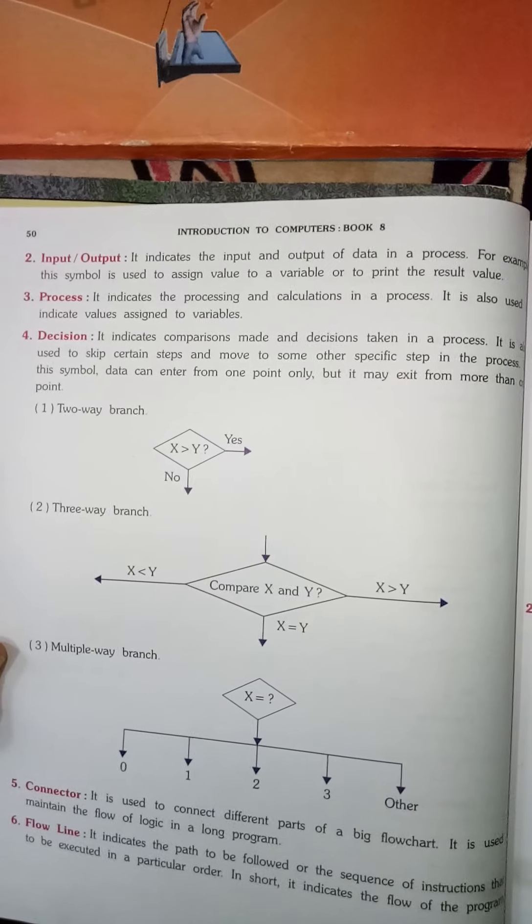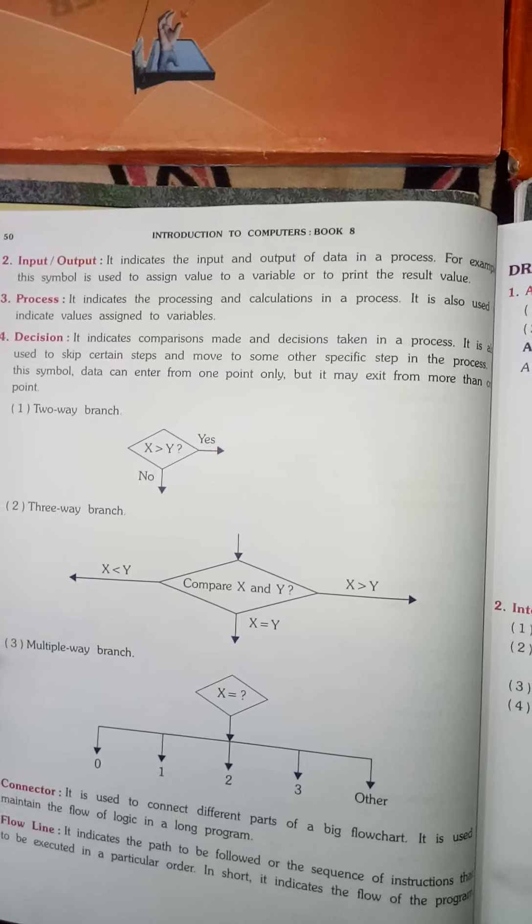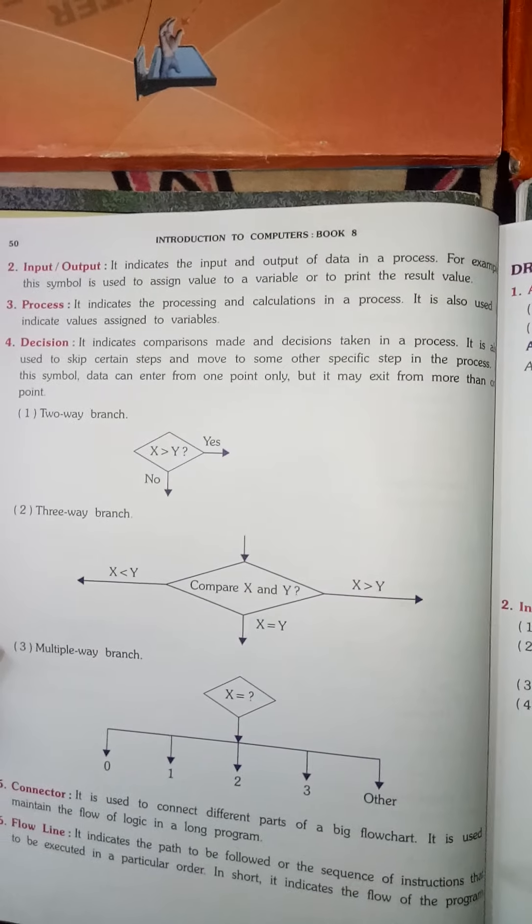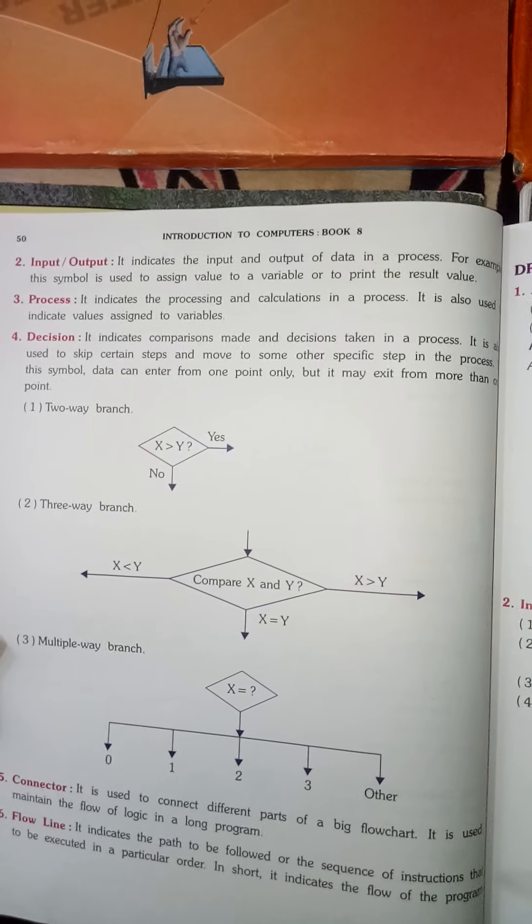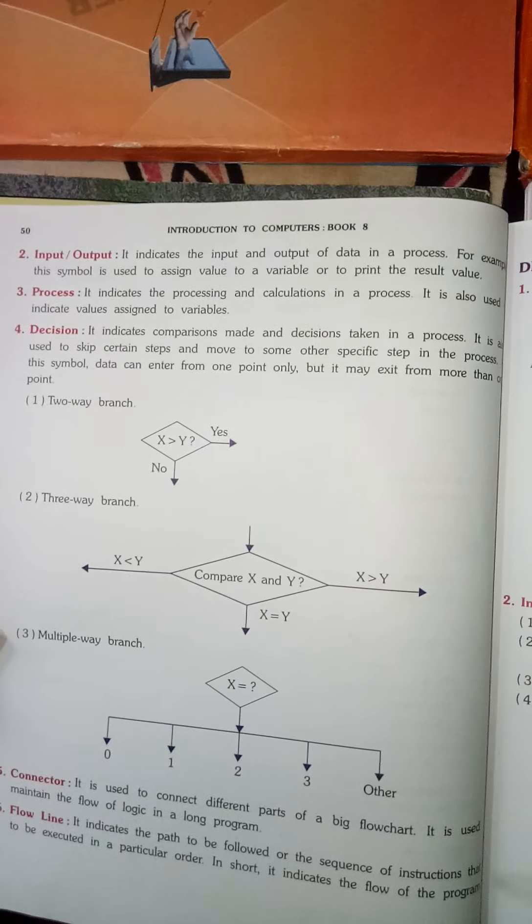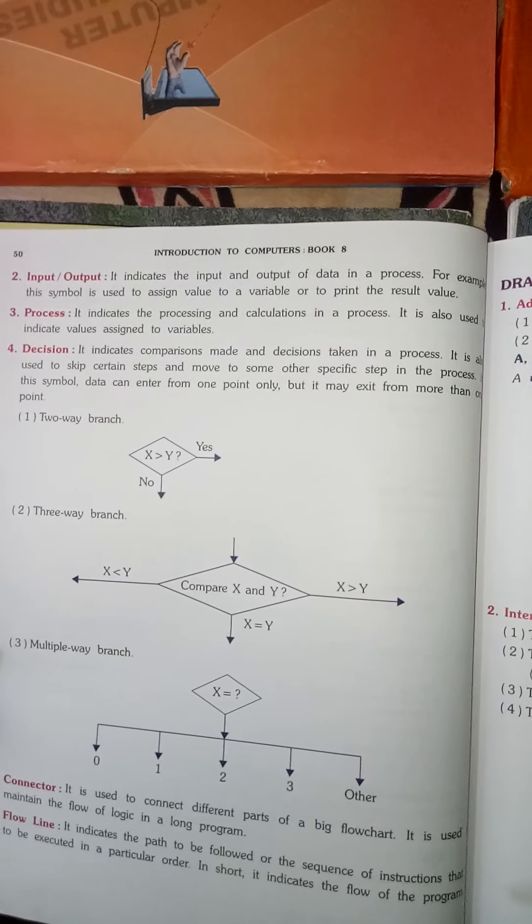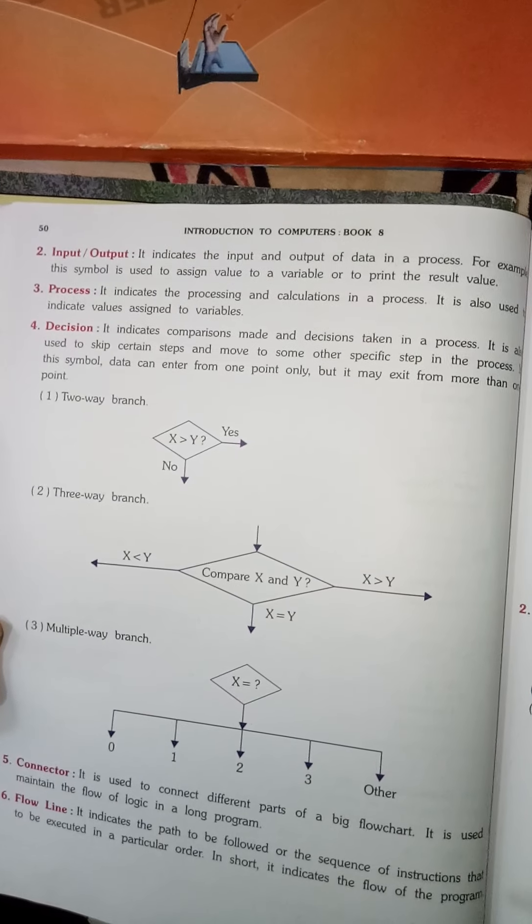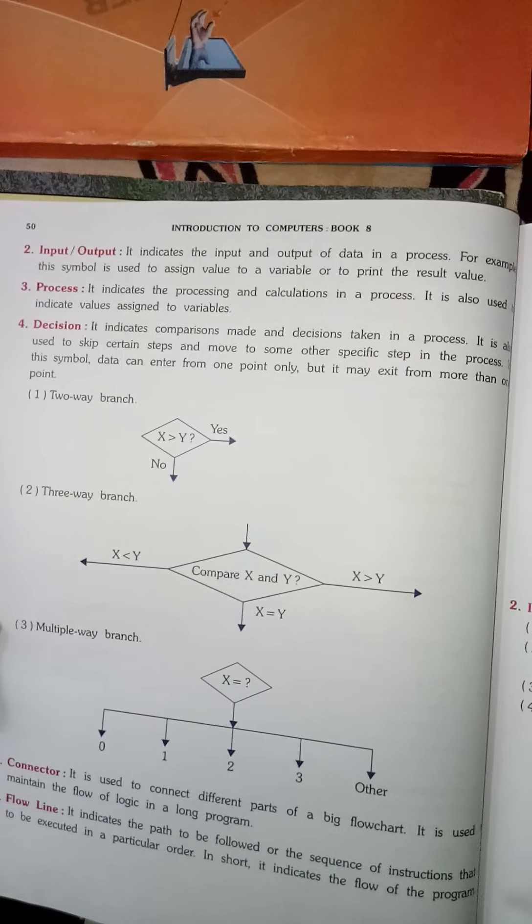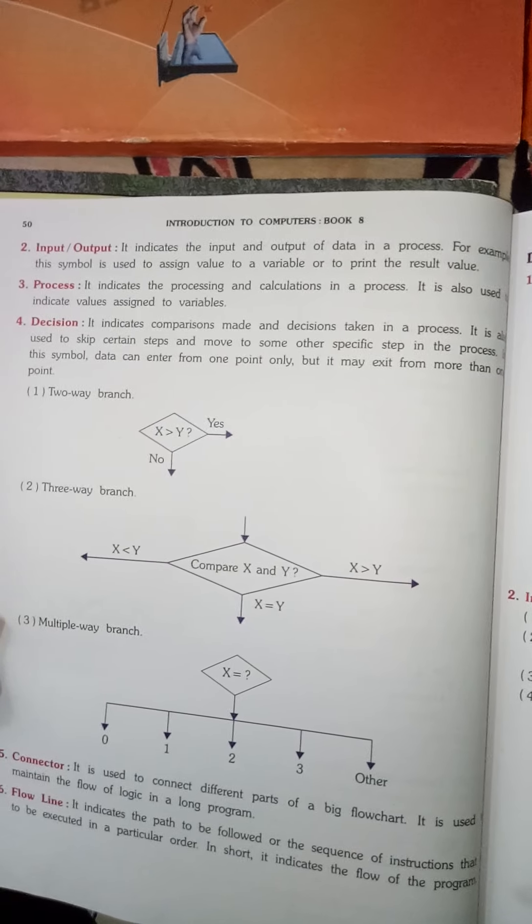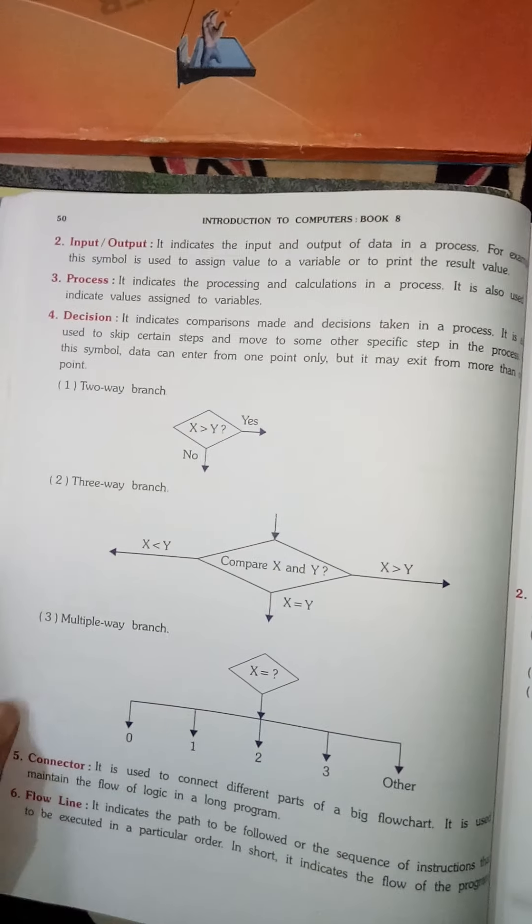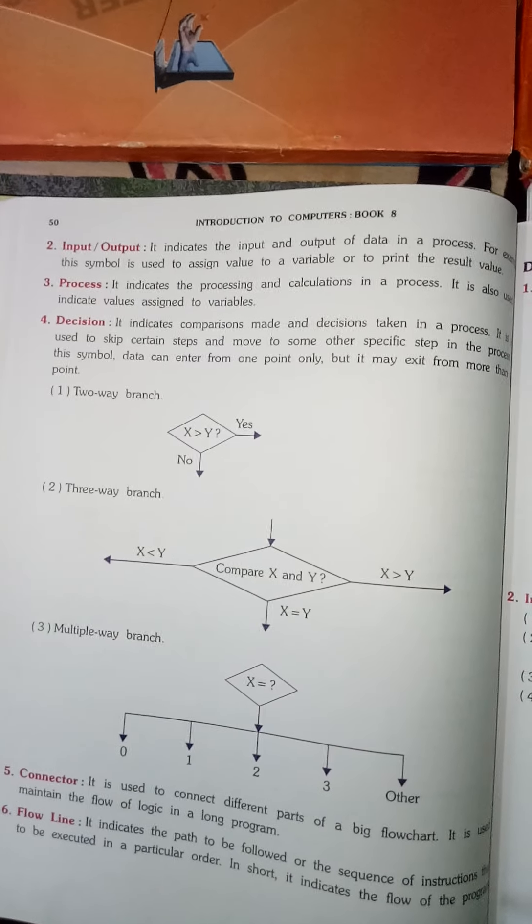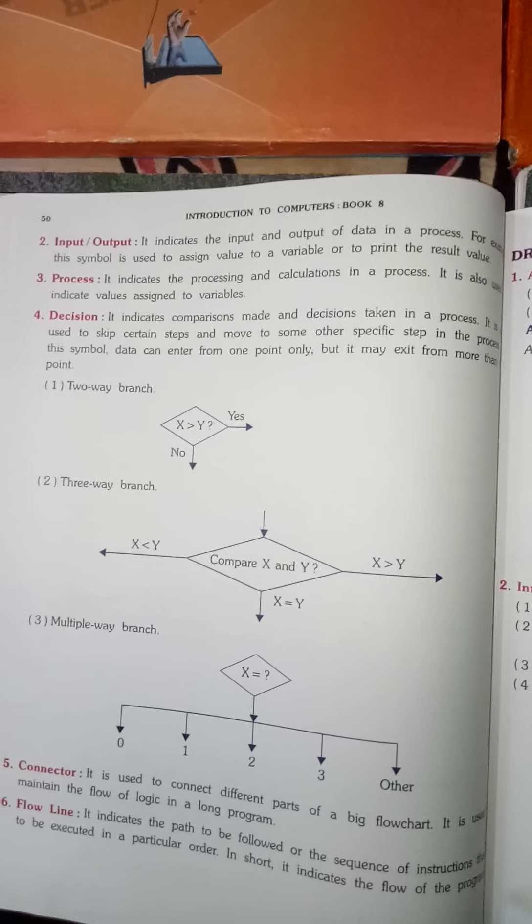Decision: It indicates comparisons made and decisions taken in a process. It is also used to skip certain steps and move to some other specific step in the process. In this symbol, data can enter from one point only, but it may exit from more than one point.